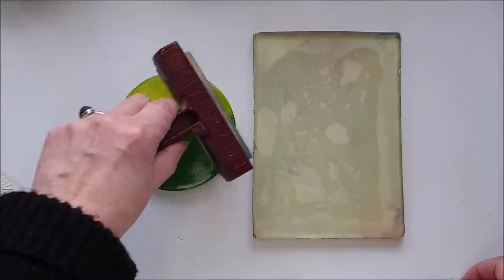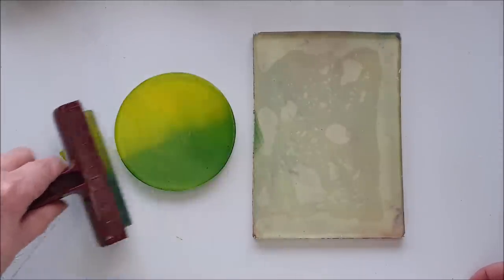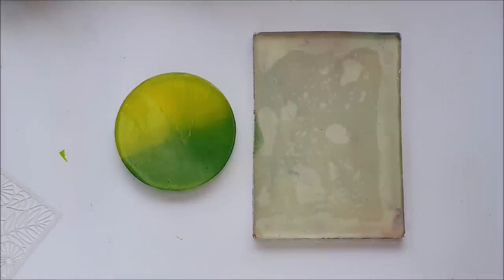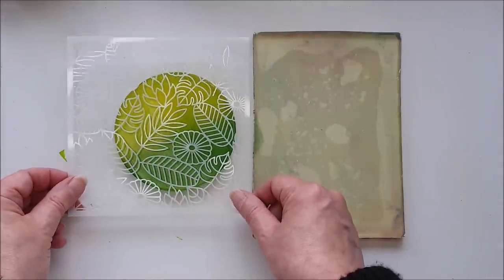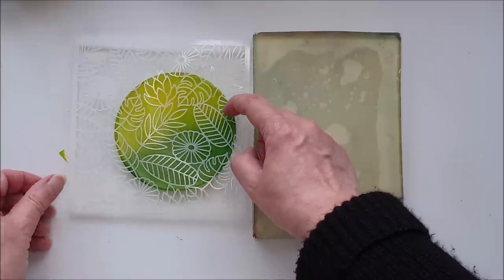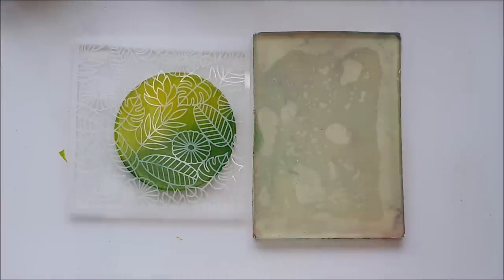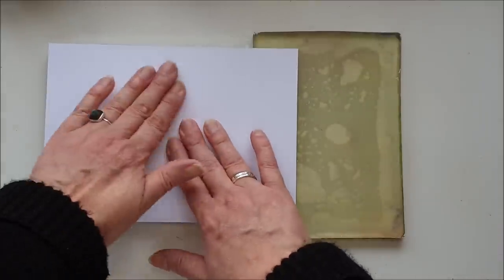And I'm just going to use the brayer to soften that line in the middle. I'm going to pop my stencil on top, deciding on the placement where I want it. And I'm going to pull a print through the stencil.